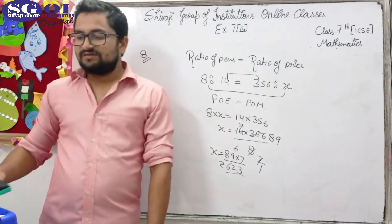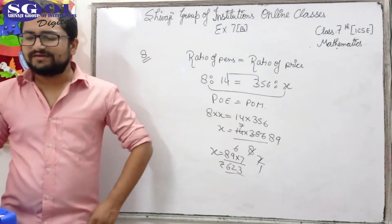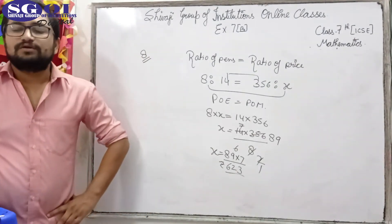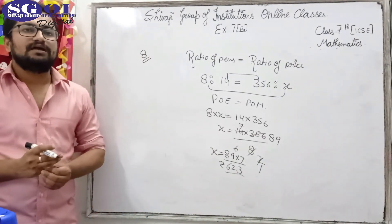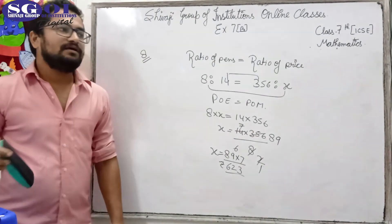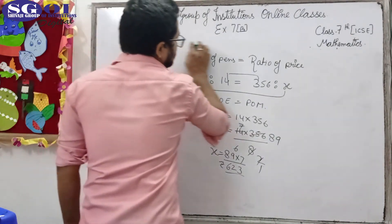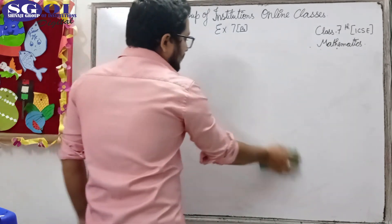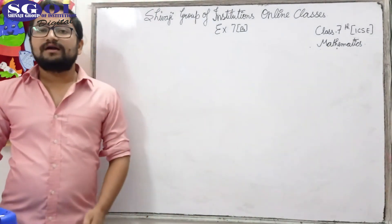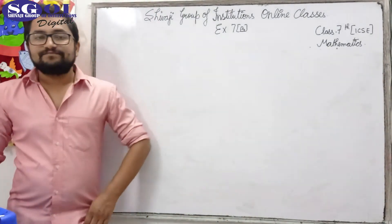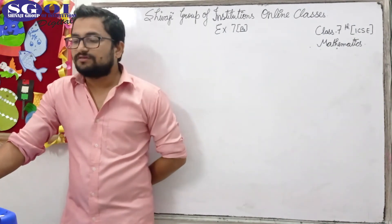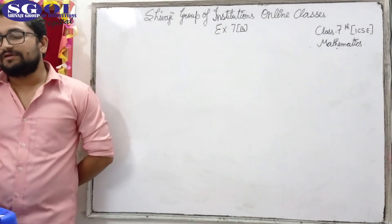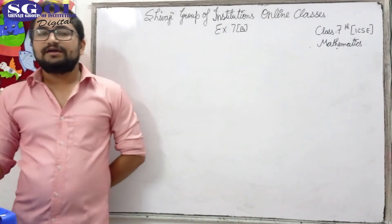Questions number 9, 10, and 11 are very similar to question number 8. Now question number 12 has an extra term — that extra term is 1 day. The question says: if 15 men can dig a trench 35 metres long in 1 day, then how many men can dig a similar trench 84 metres long in 1 day?